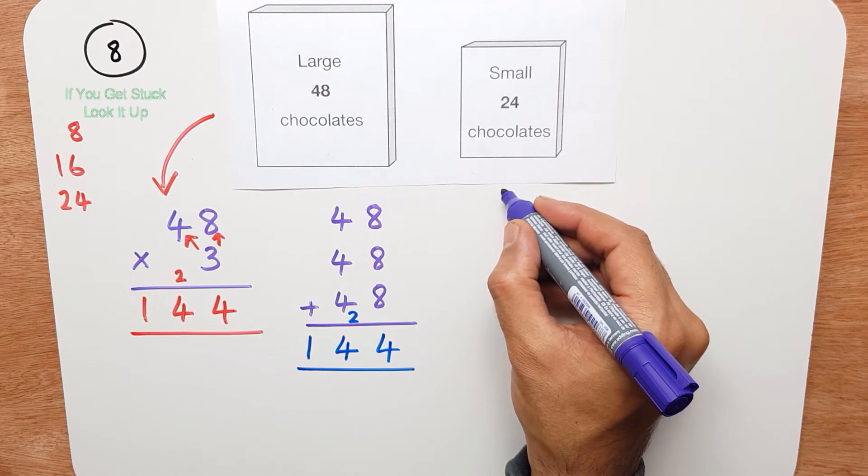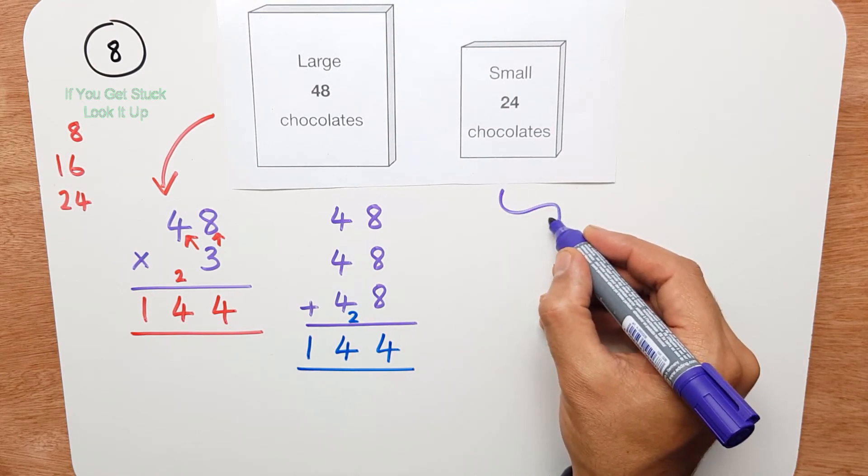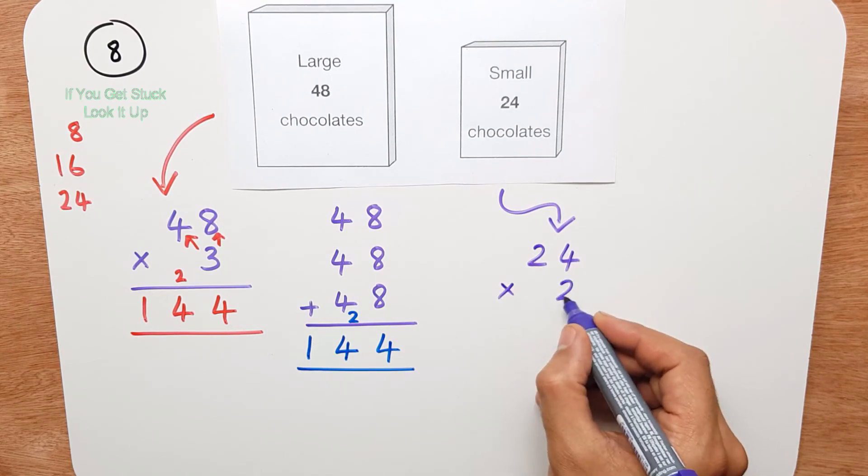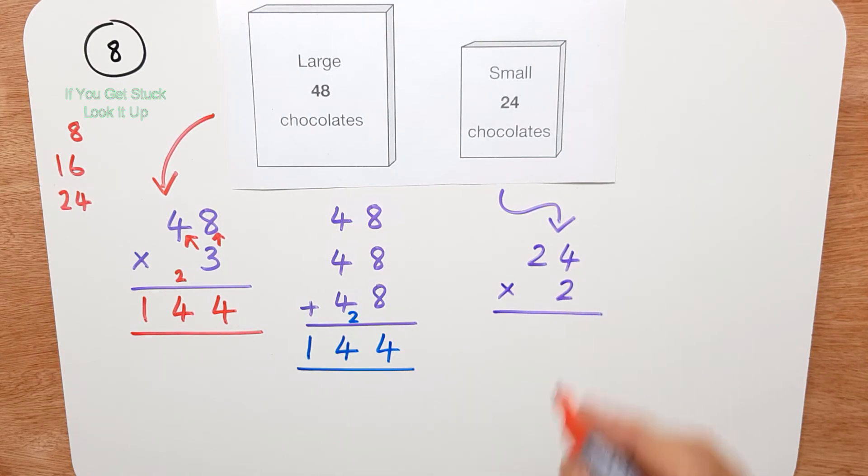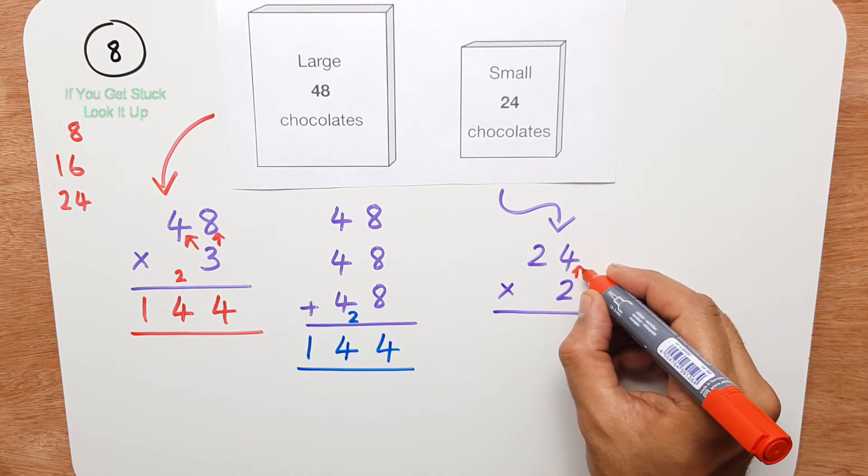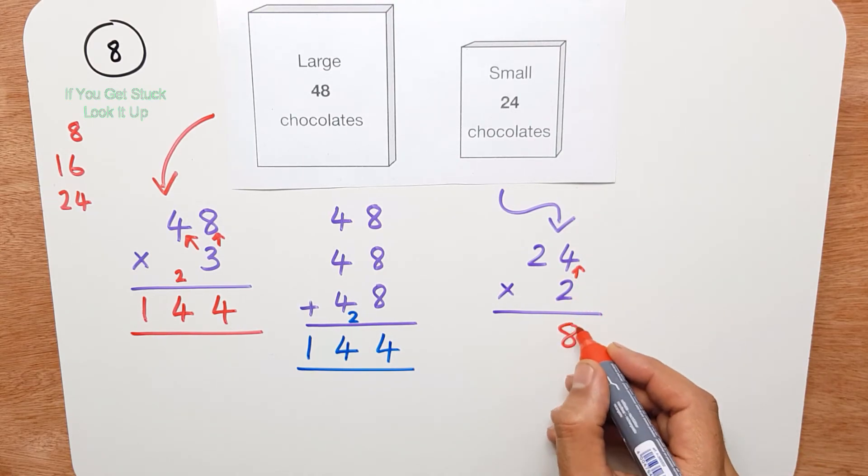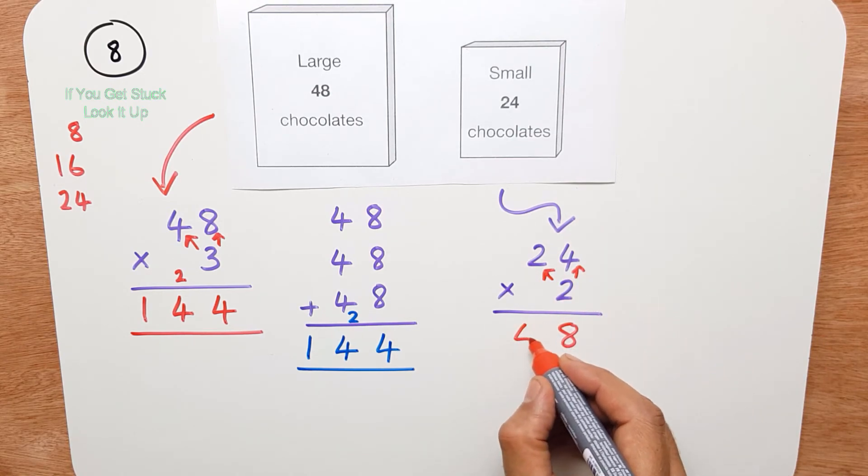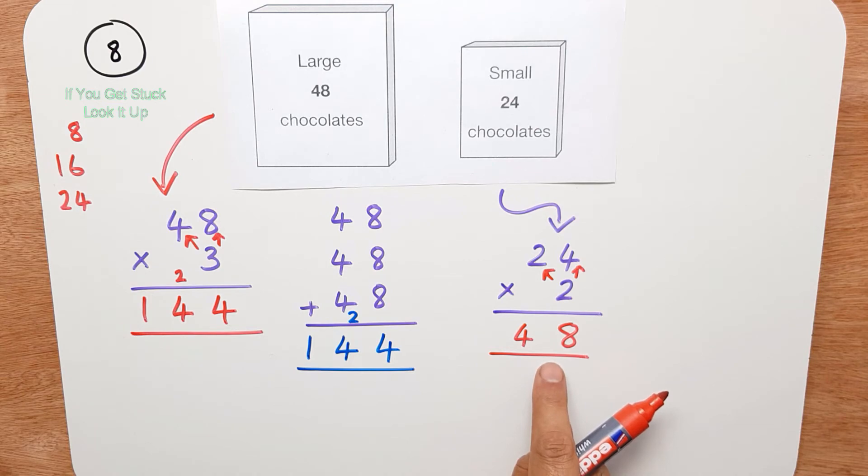Now we have 2 small boxes. So I can do 24 times 2. 2 times 4 is 8, and 2 times 2 is 4. So that's 48.